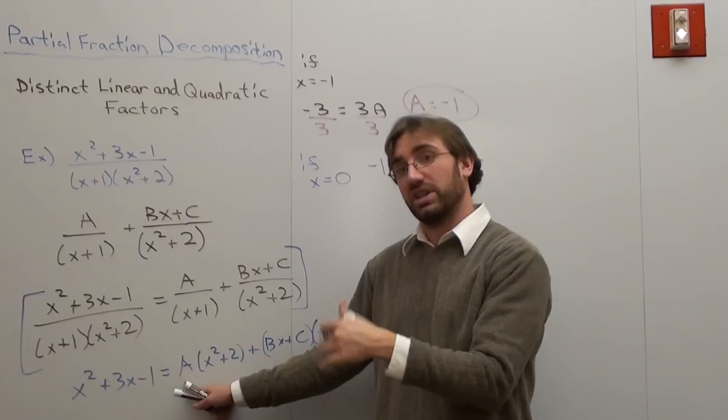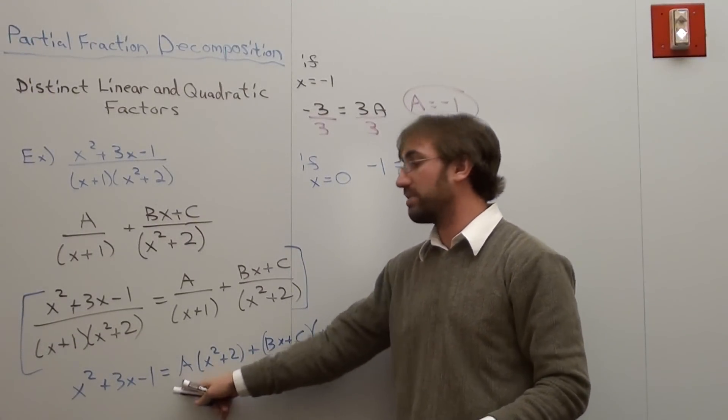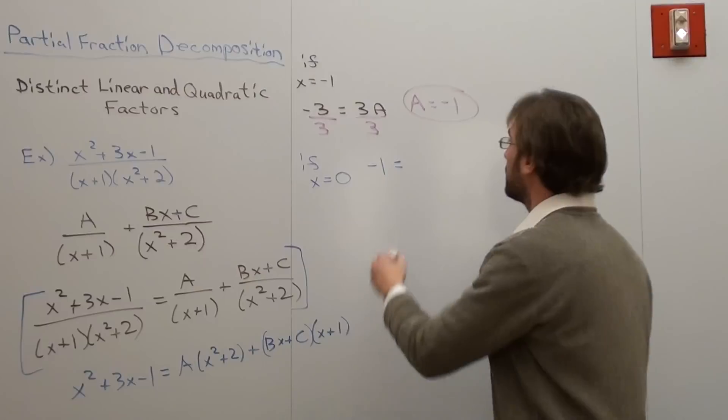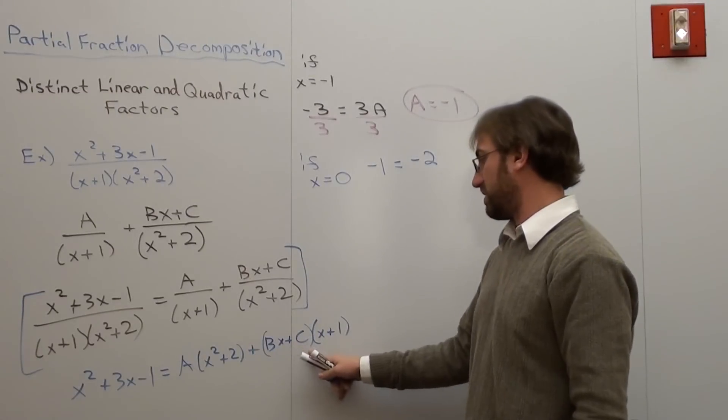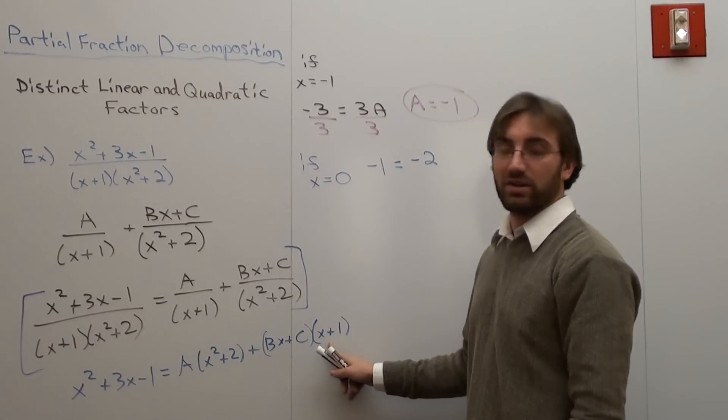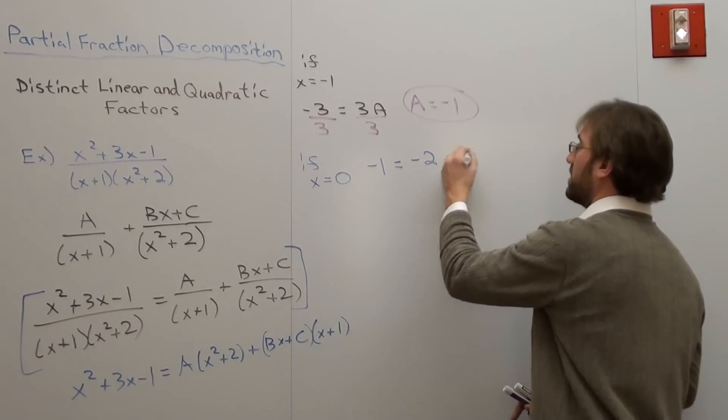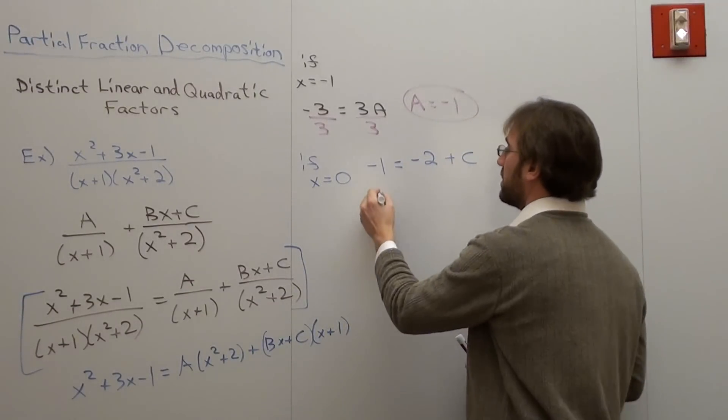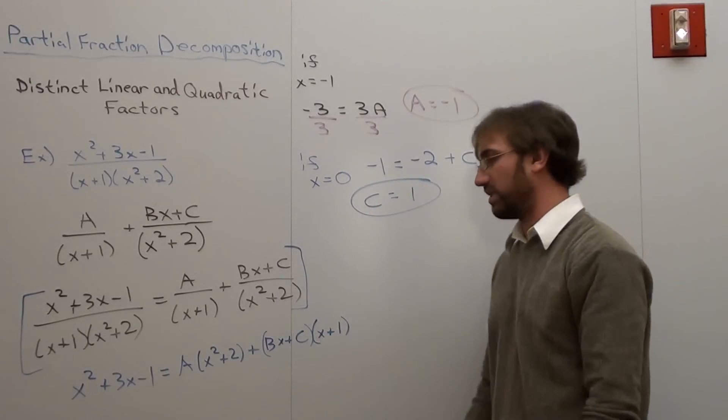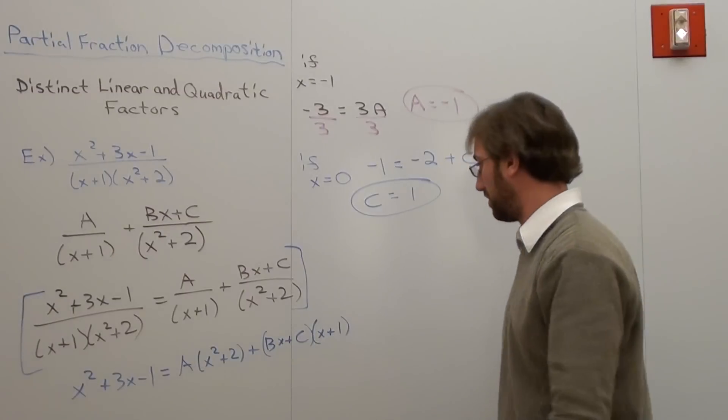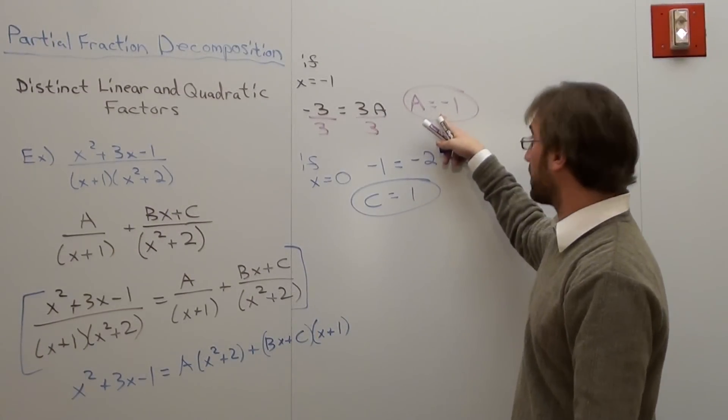If x equals 0, then I've got 0 squared plus 3, and that's negative 1, equals... Okay, we're going to substitute in the a value, and the a value is negative 1. So 0 plus 2 is 2, 2 times negative 1 is negative 2, and then I've got plus bx plus c times x plus 1. Well, if that's 0, that's 1, if that's 0, then all I've got is c. So I've got a plus c. So c equals 1. Oh, that was a lot easier than I thought. I thought I was going to have to do a linear system there.